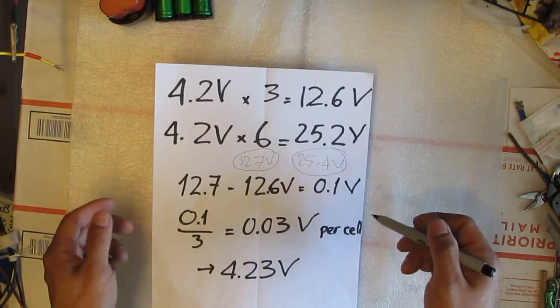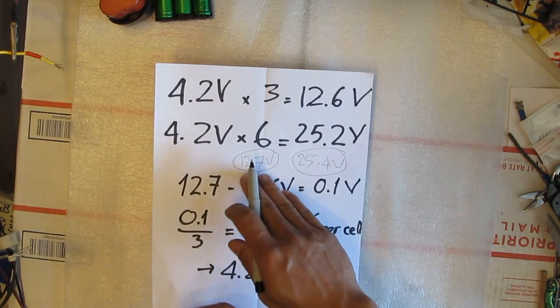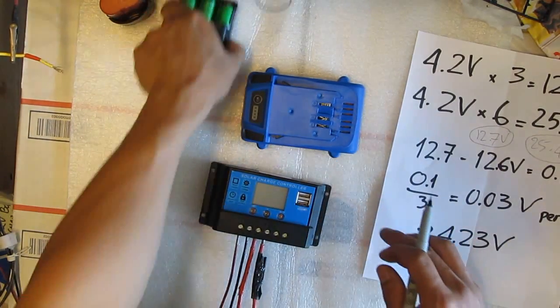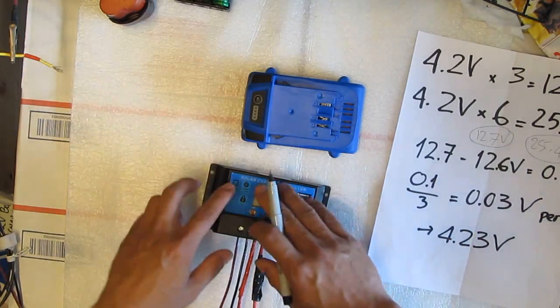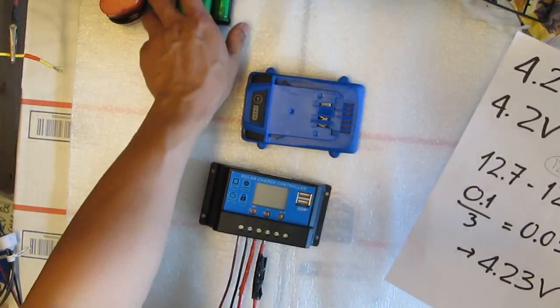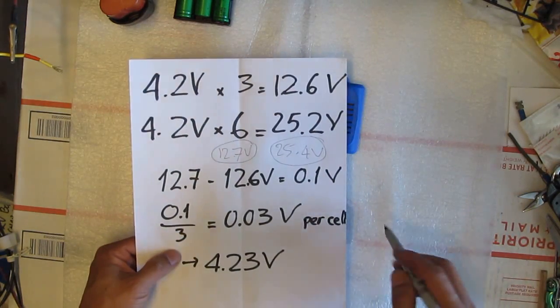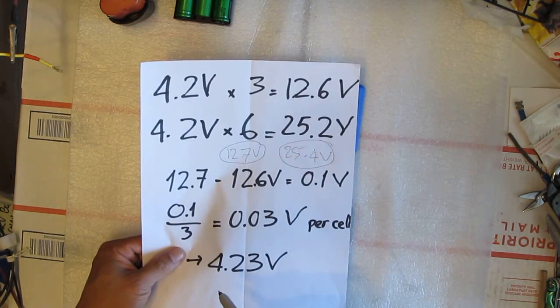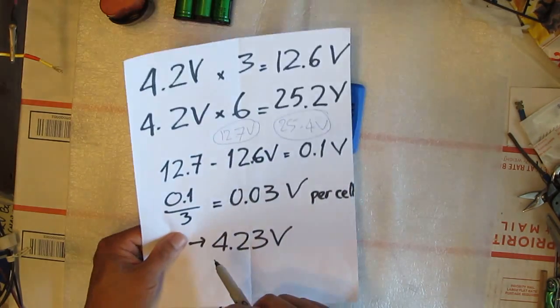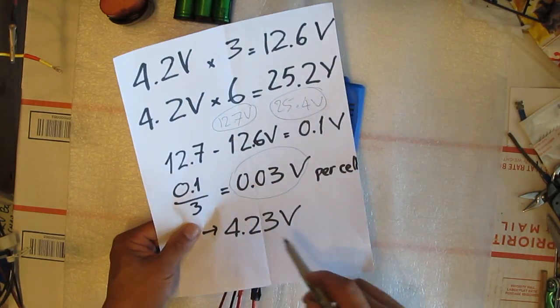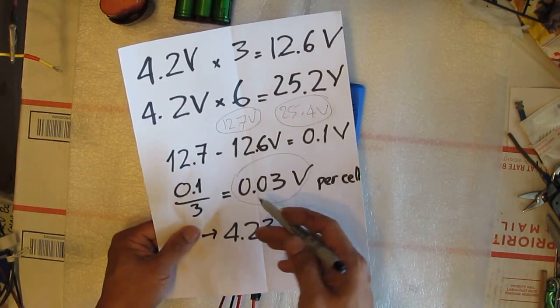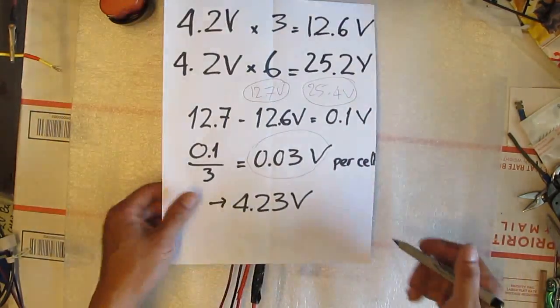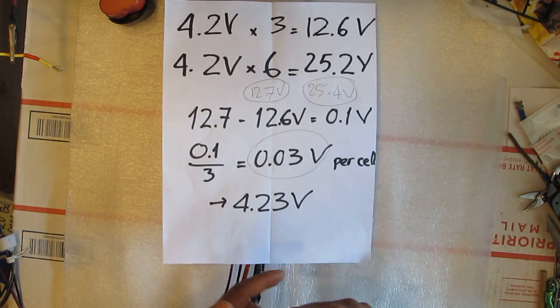But that should be fine. Because the lead-acid battery is designed at 12.7 volts. But, you know, there's a coincidence that, you know, in the multiple of three or six, this controller still can charge a lithium-ion battery pack. But anyway, so it charges my 24-volt system at 25.4 volts. If you divide that by six, you still get 0.03 volts over voltage per cell. So that's exactly the same as the 12.7-volt system for a three cell. So it's still the same. It's basically the same thing.